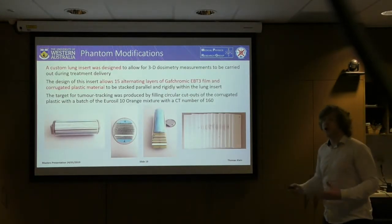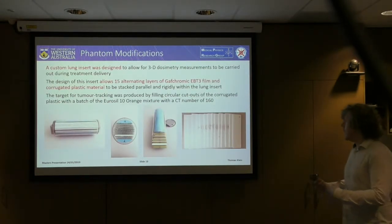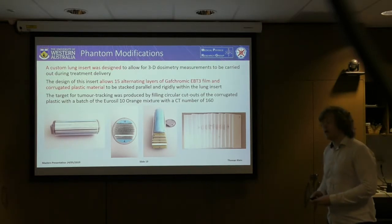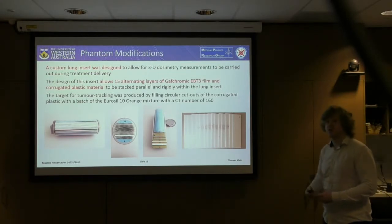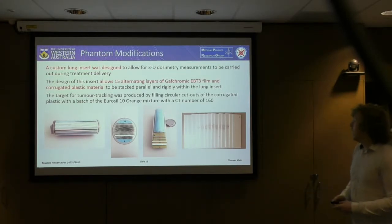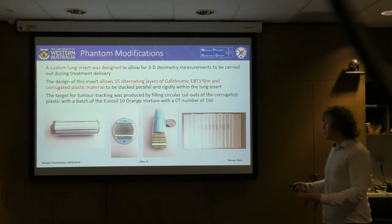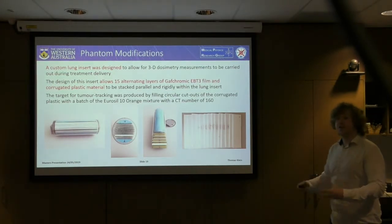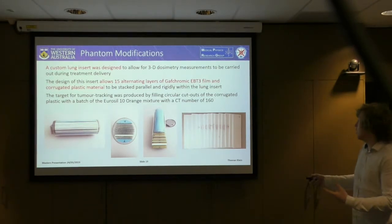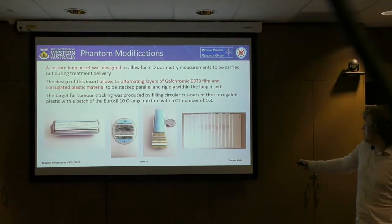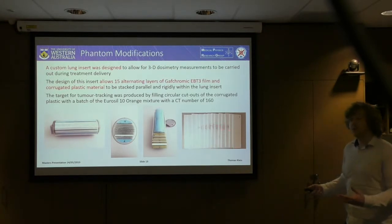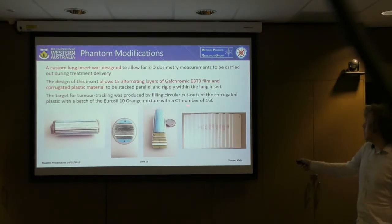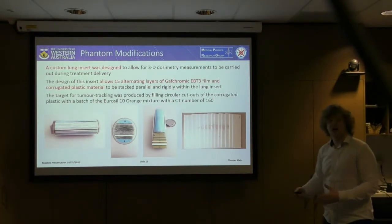We designed a custom lung insert to allow 3D dosimetry measurements. This consists of 15 alternating layers of stacked gafchromic film and a corrugated plastic material close to air, stacked rigidly within the lung insert. The target for tumour tracking was constructed by taking circular cutouts from some of the central layers and filling these with our bone-equivalent material, made with a lower CT number to simulate the target for tracking.